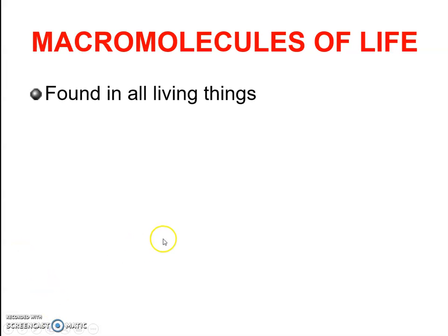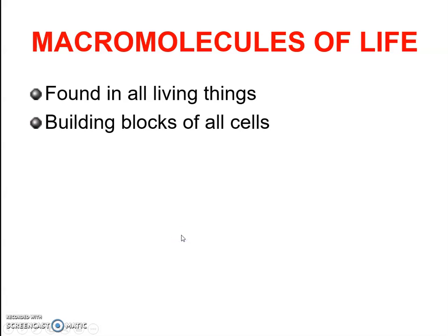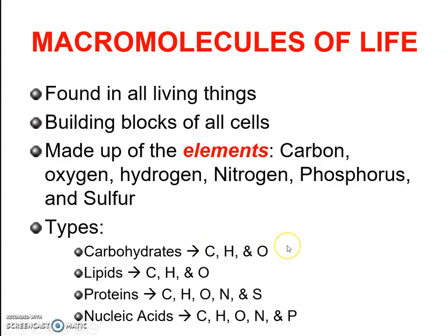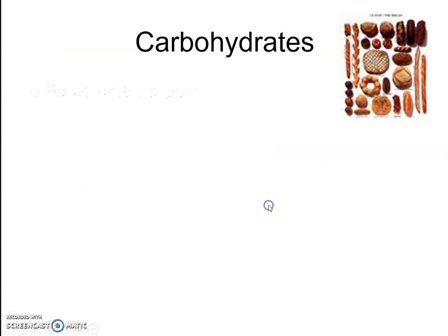Macromolecules are the major molecules of life, found in all living things. They are the building blocks of all cells, made up of the elements carbon, oxygen, hydrogen, nitrogen, phosphorus, and sulfur. They come in four different types: carbohydrates, which contain carbon, hydrogen, and oxygen; lipids, which also contain carbon, hydrogen, and oxygen; proteins; and nucleic acids.